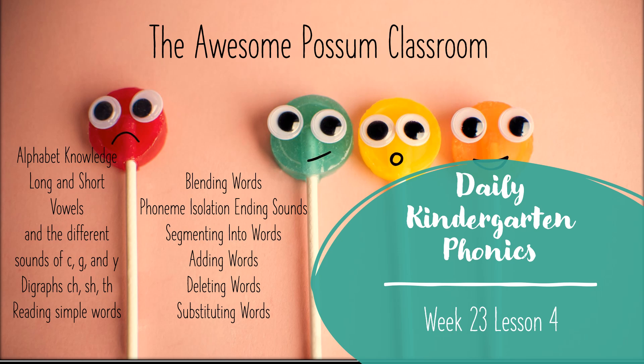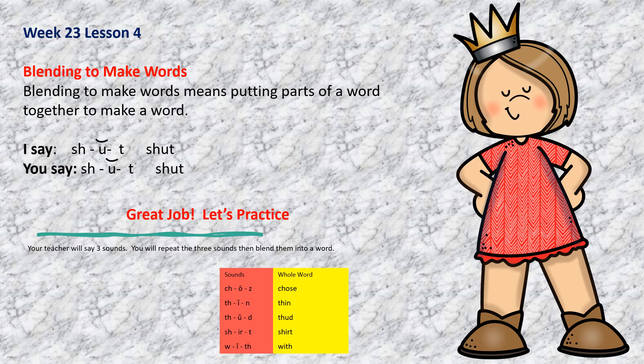Welcome back to the Awesome Possum Classroom. This is week 23, lesson 4 of your daily kindergarten phonics. Blending to make words. Blending to make words means putting parts of a word together to make a word.